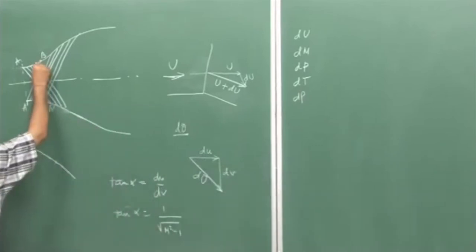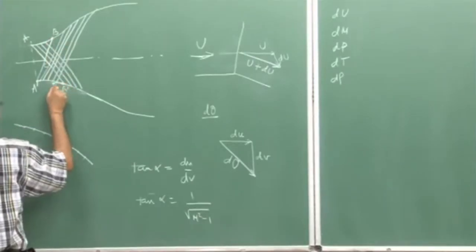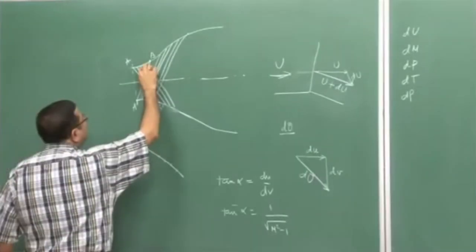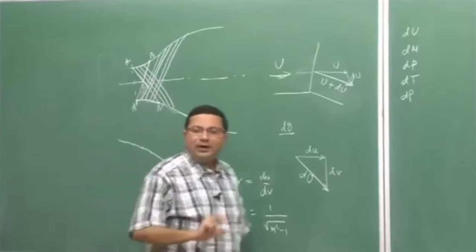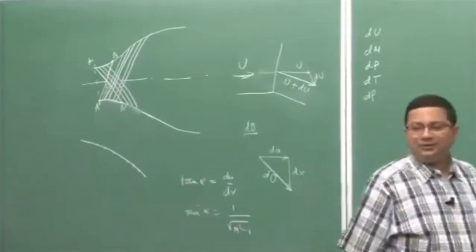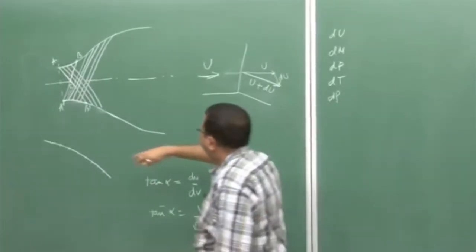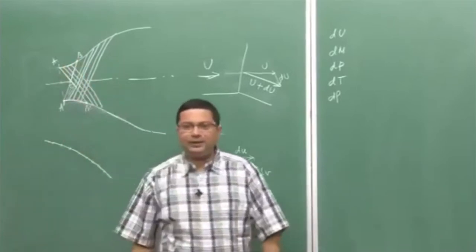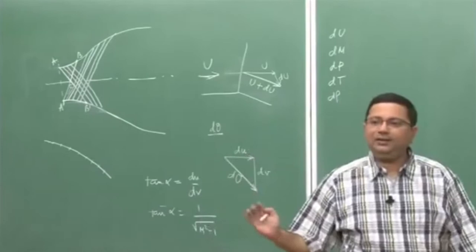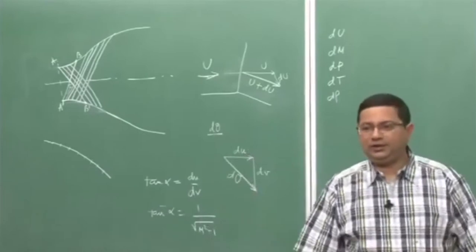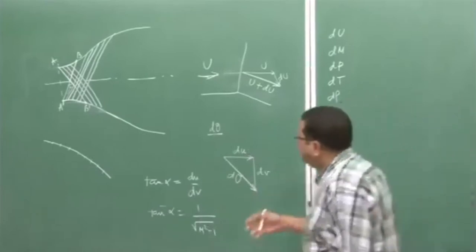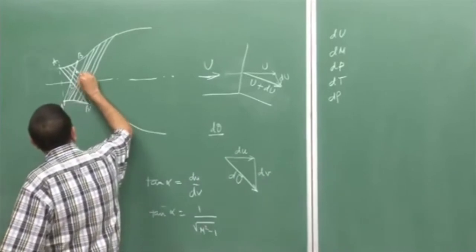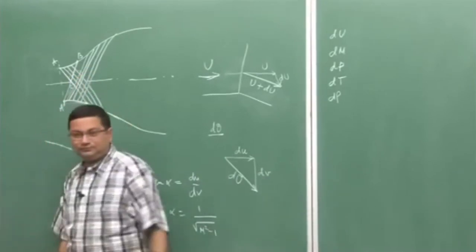By doing so, till point B — starting from point A to point B — all the conditions are now known, and here the Mach lines are not crossing each other. The next thing we have to discuss is this zone where the Mach lines are crossing each other. If they are crossing, after every crossing there is a change in property.